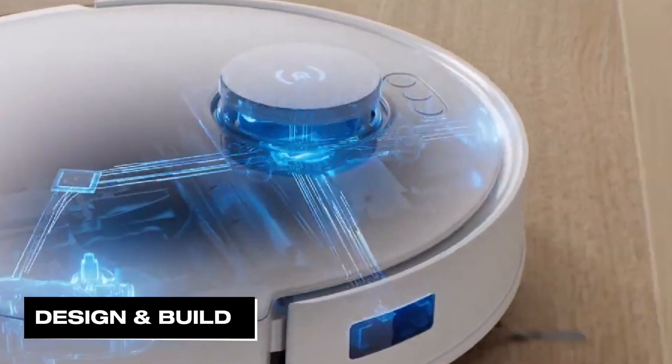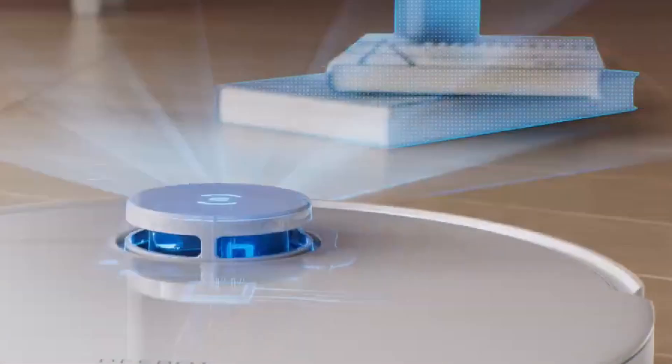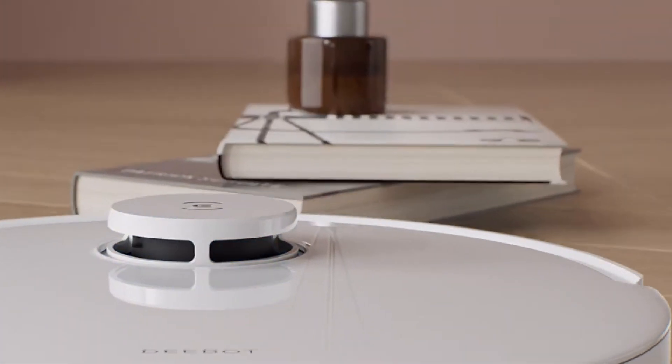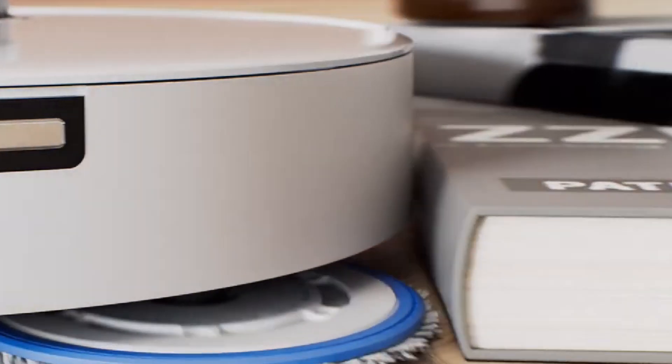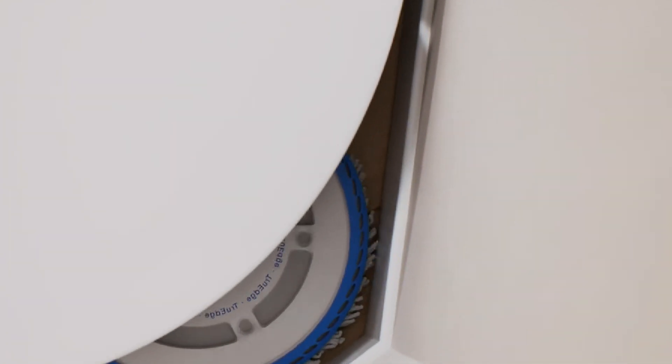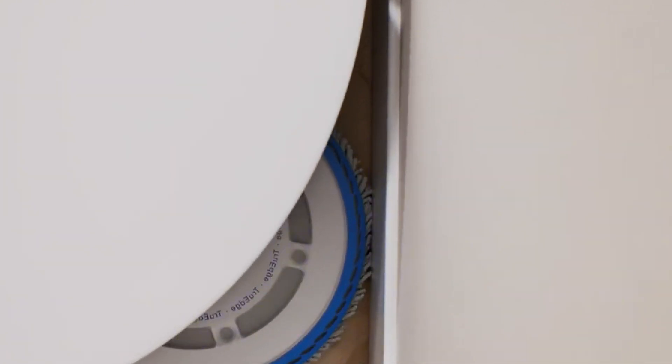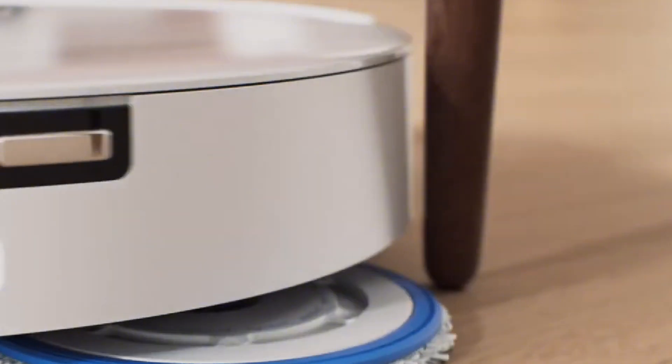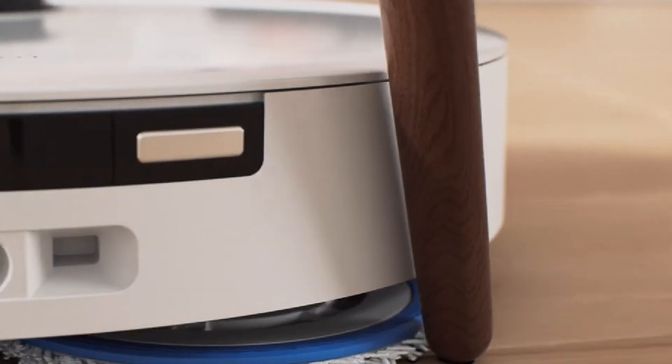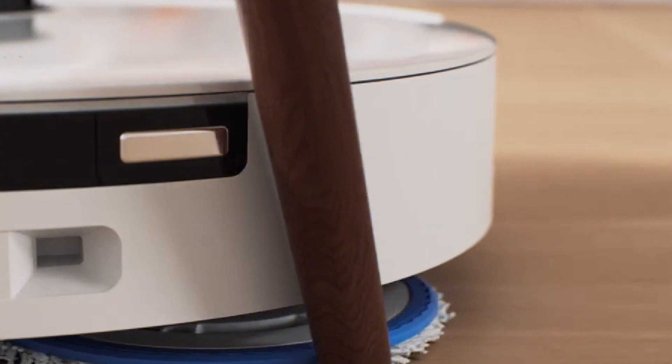Design and build: the Ecovacs D-Bot T30 is a striking example of modern design, featuring a sleek, minimalist aesthetic that seamlessly blends with various home decors. Its round shape and low profile, measuring approximately 3 inches in height, allow it to easily glide under sofas, beds, and other low furniture, ensuring that those hard-to-reach areas are not overlooked during cleaning sessions.